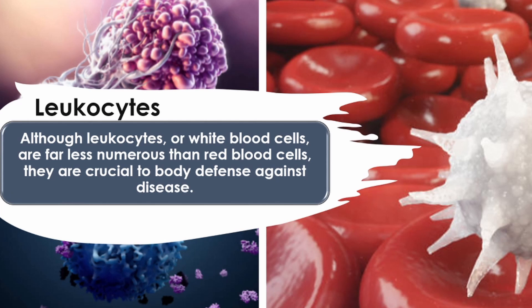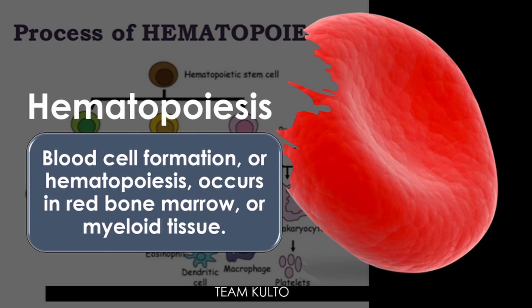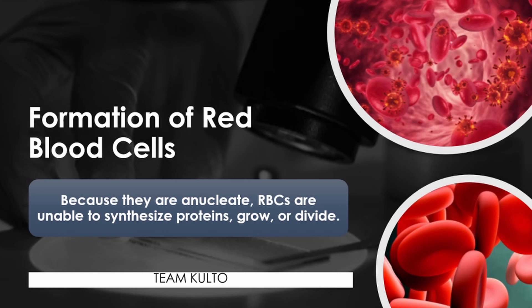Next blood component is hematopoiesis. Blood cell formation or hematopoiesis occurs in red bone marrow, also called myeloid tissue. Hematopoiesis is the production of all the cellular components of blood and blood plasma. It occurs within the hematopoietic system, which includes organs and tissues such as bone marrow, liver, and spleen. Simply put, hematopoiesis is the process through which the body manufactures blood cells.